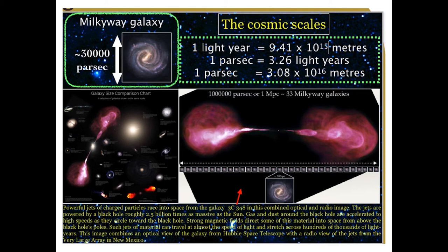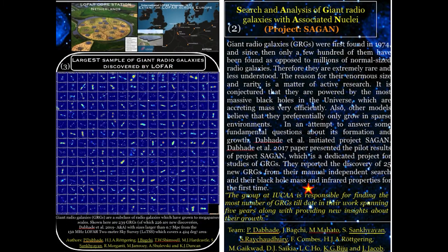Giant radio galaxies were first found in 1974. According to current studies of GRG population, it is found that the GRG population is comparatively rare. Till now there are only 820 giant radio galaxies as compared to millions of radio galaxies. More than 50% of GRG population has been reported in the last two years by our group at Ayuka.